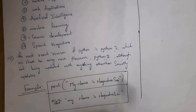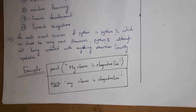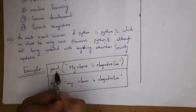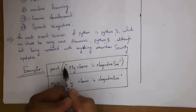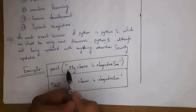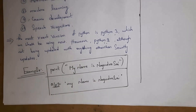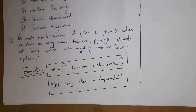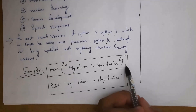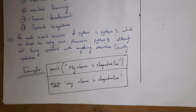Here is the first Python program to print a name. I have written print, open bracket, double quotation marks, 'My name is Nagendra'. In Python you use print instead of printf in C. The print function generates output and no semicolon is needed at the end. By running this program, the output will be 'My name is Nagendra'.